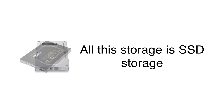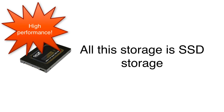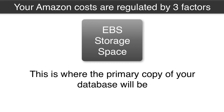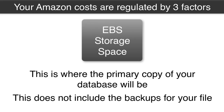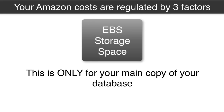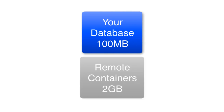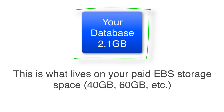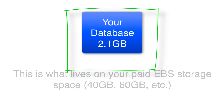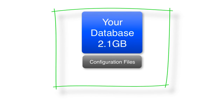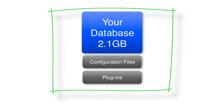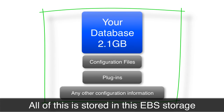This is SSD-based storage — solid-state drives — which are high-performance drives. This EBS storage, regardless of size, is simply there to store your one main live master copy of your database. It does not include the backups that FileMaker Cloud creates. Whatever you decide — 40, 60, or more gigabytes — is only for your main copy of your database, including any remote containers. Also stored here are configuration files, plugins, and any additional configuration information specific to your server.